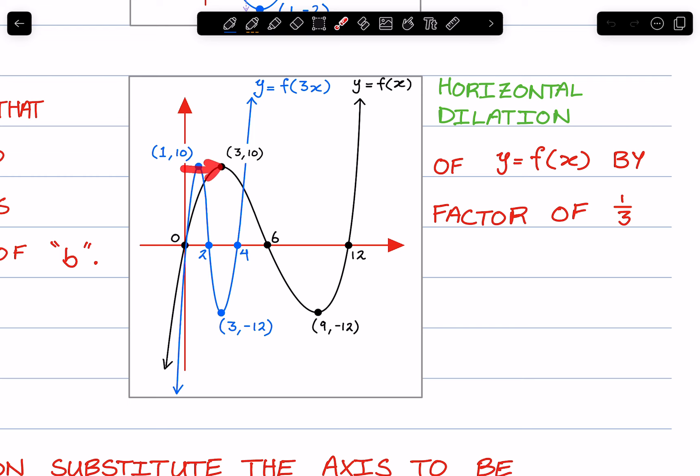Multiplying that by a third, we get 1. Likewise, this point, its distance is 6. Multiplying that point by a third, we get 2.